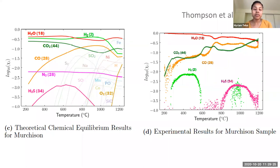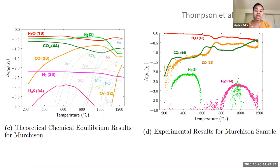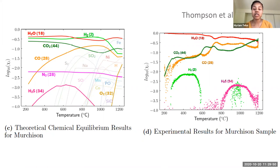These experiments are a step in the direction of trying to better connect the bulk composition of an exoplanet to the atmospheric composition. My student Maggie will continue the study by analyzing the residues from our experiments to understand the outgassing behavior of gas species like sodium, iron, and nickel, which may be more directly linked to the bulk composition of the exoplanet. She's currently doing those analyses, and hopefully this work will support what the models say or will provide a different story.